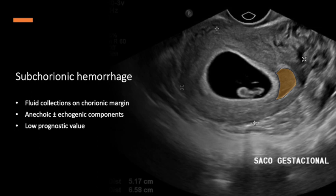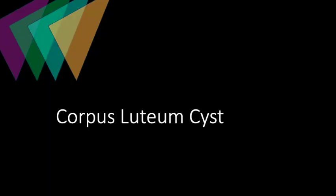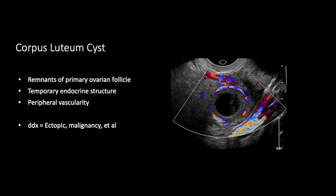Next, let's talk about subchorionic hemorrhages. One of the most common findings seen in early pregnancy is a subchorionic hemorrhage, referring to the visualization of new or chronic-appearing blood collections at the border of the chorionic membrane. This blood can appear completely anechoic when fresh, but older bleeds will also have some echogenic components. The significance of subchorionic hemorrhages isn't fully understood — small ones don't seem to be related to any difference in perinatal outcomes, but ones involving greater than 50% of the circumference of the gestational sac are associated with a higher risk of miscarriage.